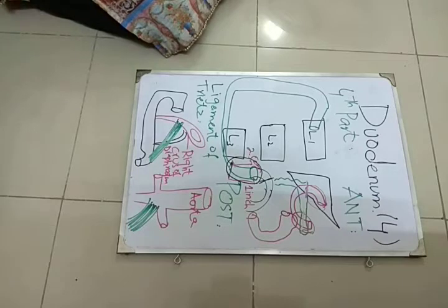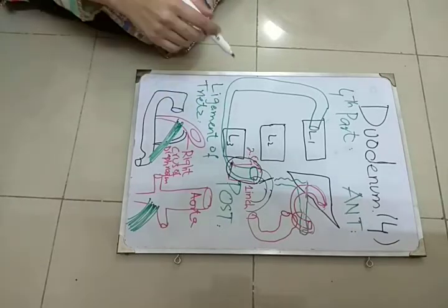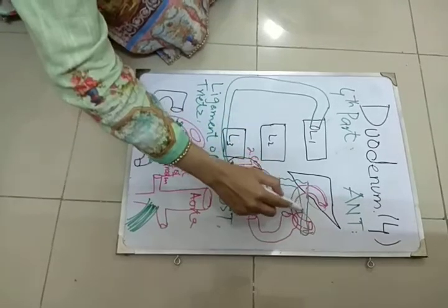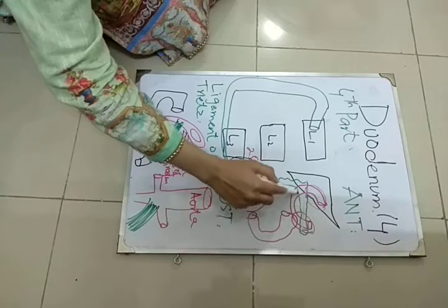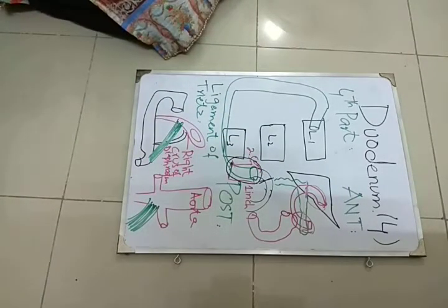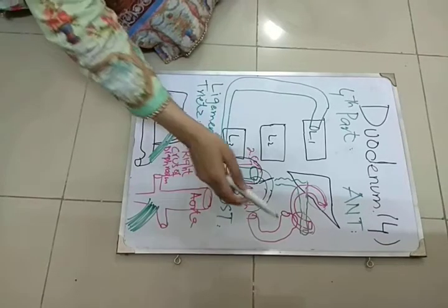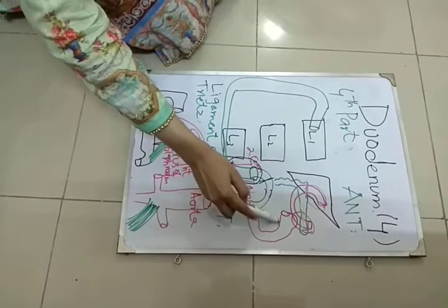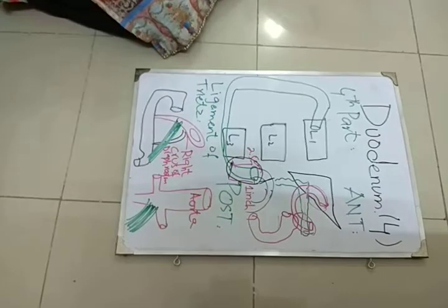Actually, the transverse colon is attached to the posterior abdominal wall with the help of transverse mesocolon. So anteriorly, transverse colon will be present, which is shown in this green structure, and also the transverse mesocolon will be present. And also, anteriorly, these are the coils of jejunum, they will also be present.